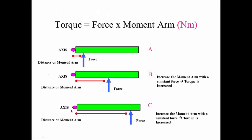So here we have an axis, some sort of center point. Here's a lever, and we apply a force. If the force is the same in all three conditions, A, B, and C, but the moment arm increases, what happens to the torque?